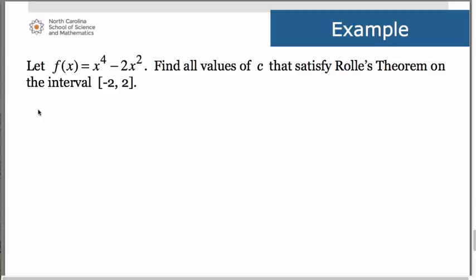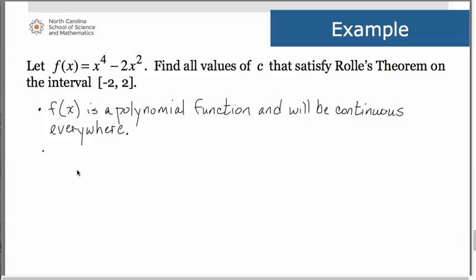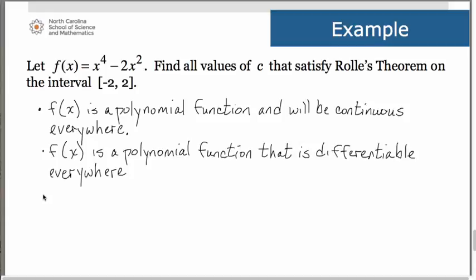So the first condition, remember, is that the function needs to be continuous on the closed interval. Well, this is a polynomial function, so it's going to be continuous everywhere. The second condition is that the function needs to be differentiable on the open interval. Once again, we have a polynomial function, so therefore it will be differentiable everywhere.